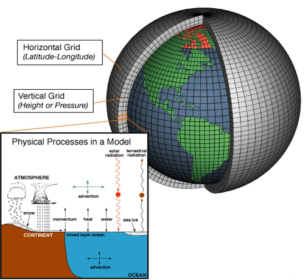Atmospheric GCMs model the atmosphere and impose sea surface temperatures as boundary conditions. Coupled Atmosphere-Ocean GCMs such as HadCM3, EDGCM, GFDL CM2.X, and ARPEGE-CLIMAT combine the two models. Models range in complexity: a simple radiant heat transfer model treats the Earth as a single point and averages outgoing energy. This can be expanded vertically via radiative-convective models, or horizontally. Coupled atmosphere-ocean-sea-ice global climate models discretize and solve the full equations for mass and energy transfer and radiant exchange. BOX models treat flows across and within ocean basins. Other submodels can be interlinked, such as land use, allowing researchers to predict the interaction between climate and ecosystems.